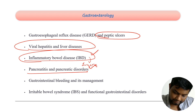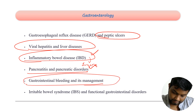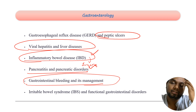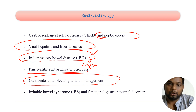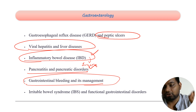Gastrointestinal bleeding and management is quite important in both surgery and medicine. Functional gastrointestinal disorders like celiac disease and Hirschsprung's disease are things you have to remember in medicine where you least expect to see them in surgery. In gastroenterology, hepatitis, peptic ulcer disease, and GERD associations are pretty high yield — super high yield — you should not miss them.